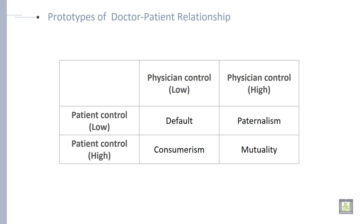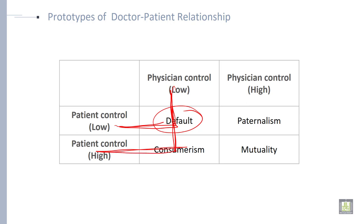The first one is called default. When patient control is low and physician control is low, if you combine these two, then it is called default — when both have low power, both have low control over each other. When physician control is low and patient control is high, then it is called consumerism.